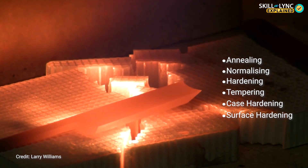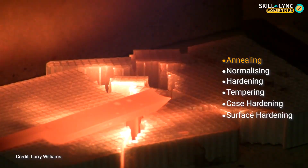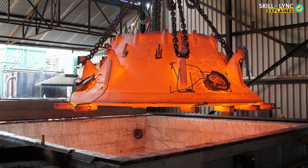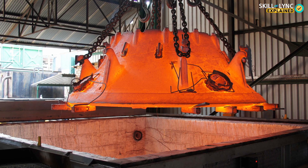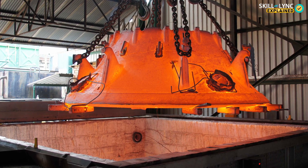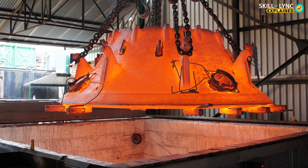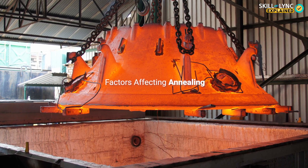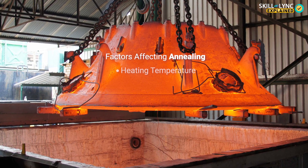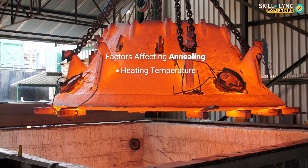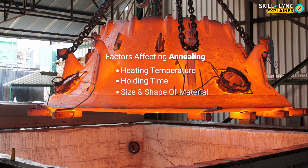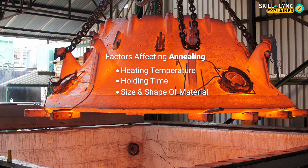In this video we will talk about the first type of heat treatment, which is annealing. Annealing is a process in which the material is heated to a specified temperature, held at that temperature, and then finally cooled down at a very slow rate. This heat treatment process is affected by the temperature to which the material is heated, the time period during which the material is held at that temperature, and the size and shape of the material.